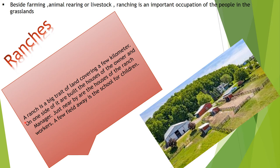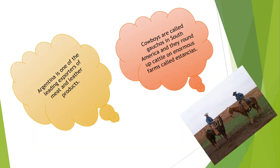A few fields away is the school for children. You can have a look at this picture to get an idea of how ranches look. Cowboys in prairie grasslands ride horses and take care of the cattle and farms called ranches. Cowboys are called gauchos in South America and they round up cattle on enormous farms called estancias. The production of meat and dairy products is based on advanced technology, and at present Argentina is one of the leading exporters of meat and leather products.